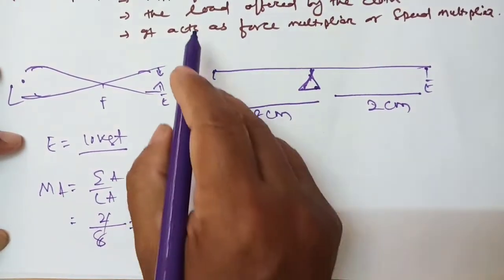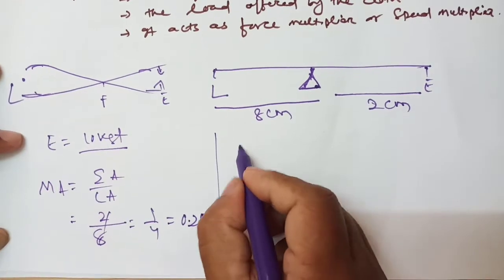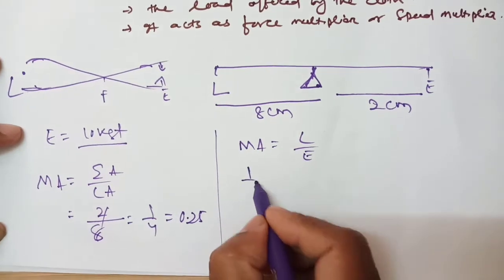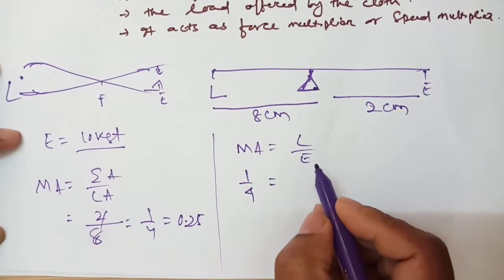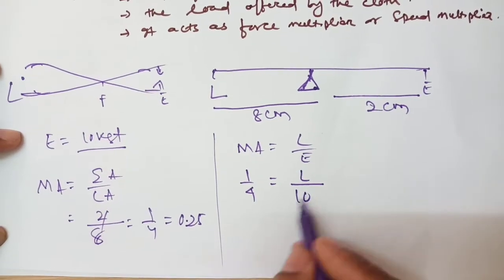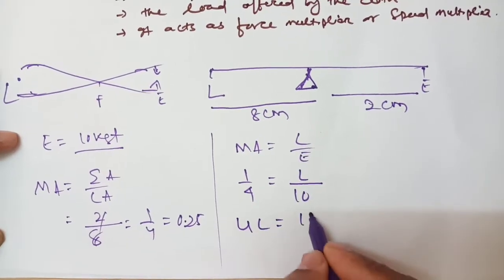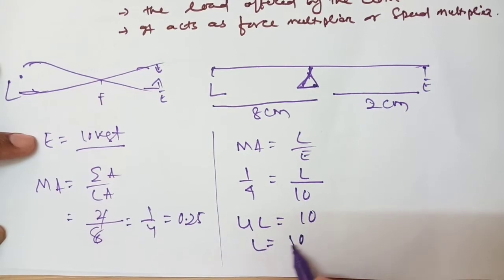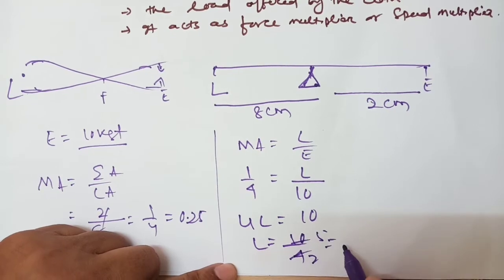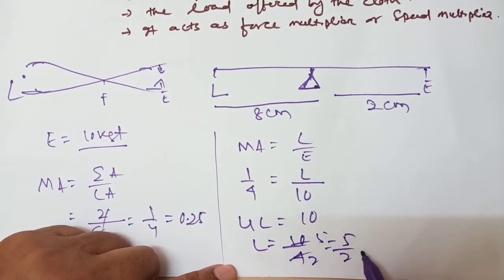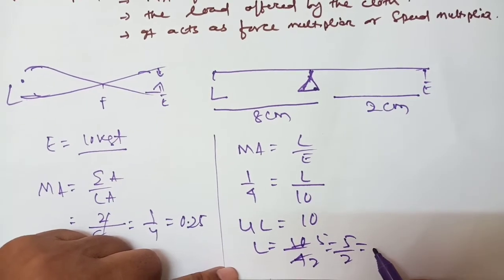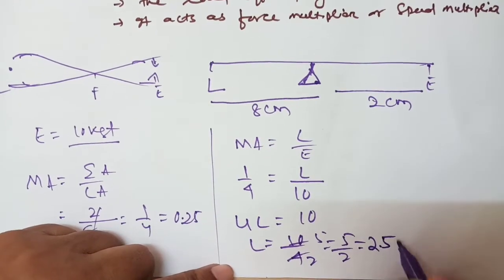Now find the load. MA = Load by Effort, so 1 by 4 = Load by 10. Therefore L = 10 by 4 = 2.5 kgf.